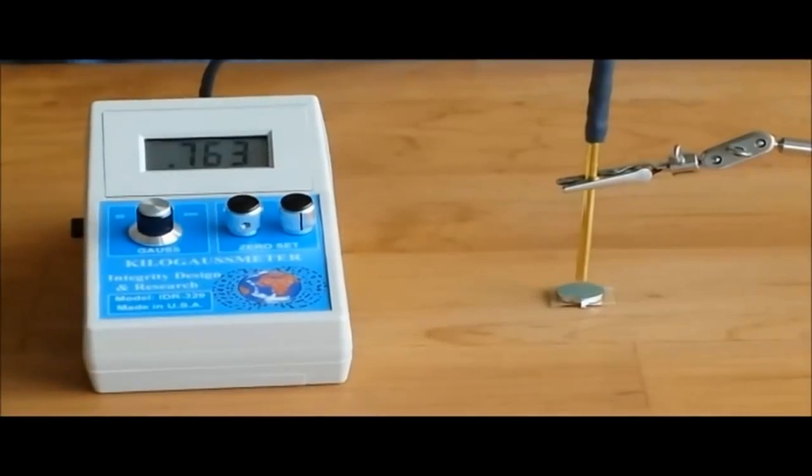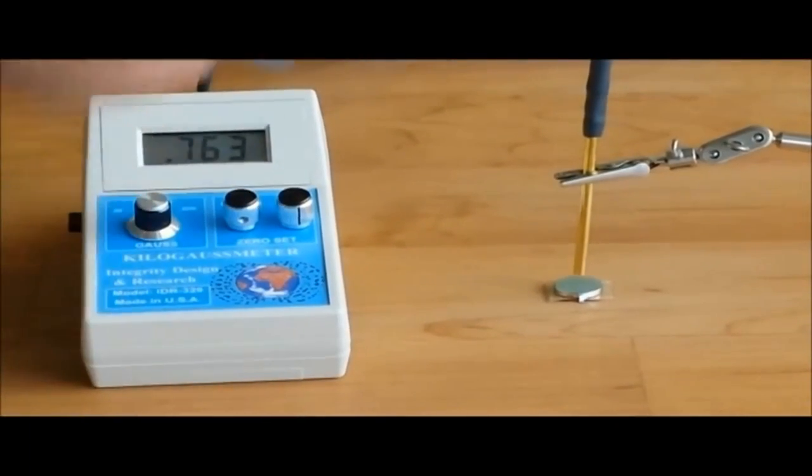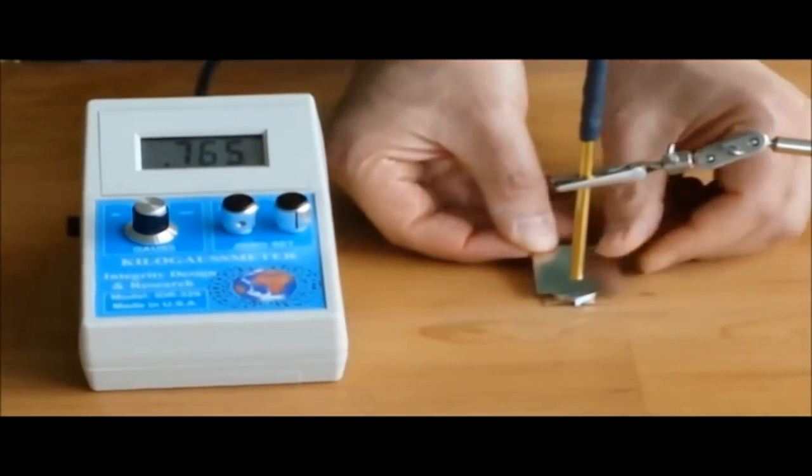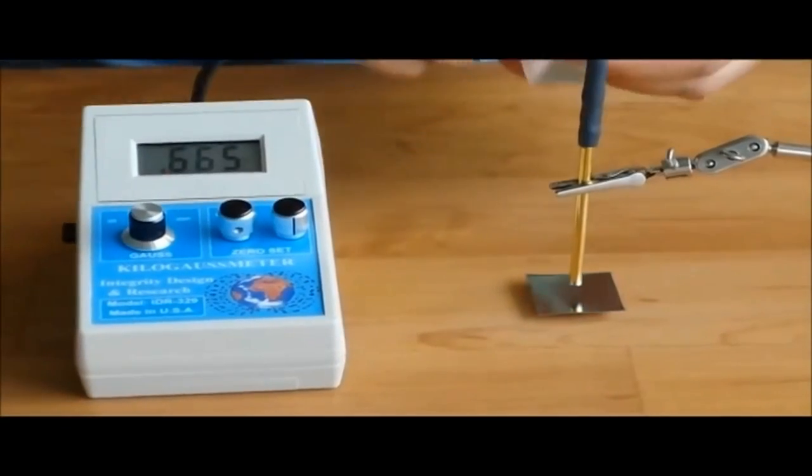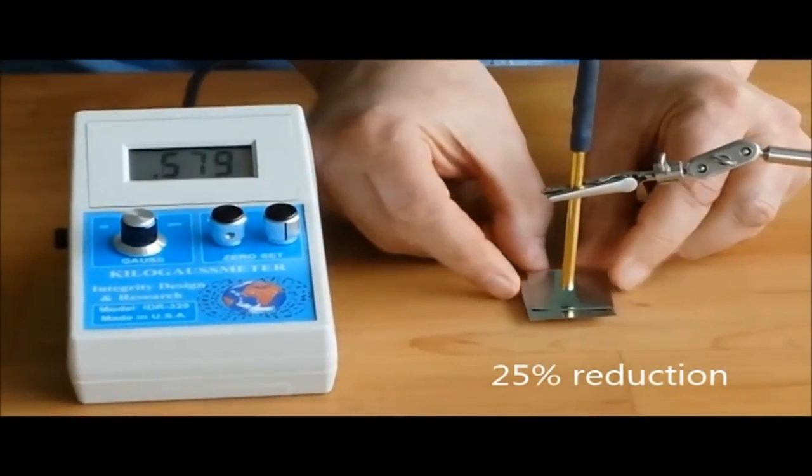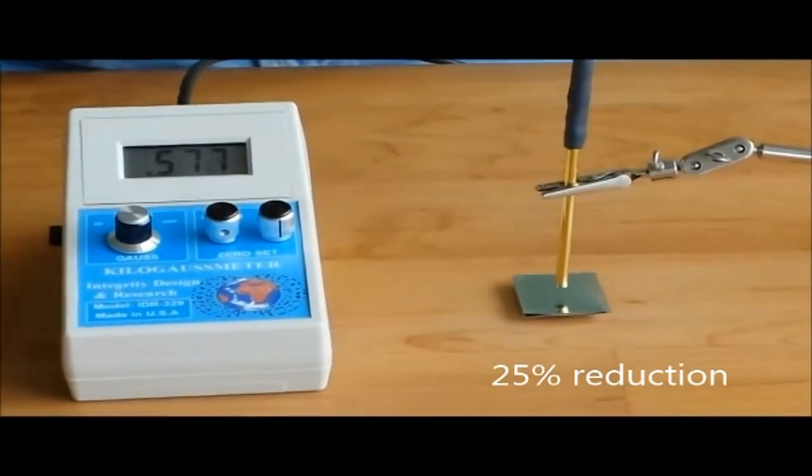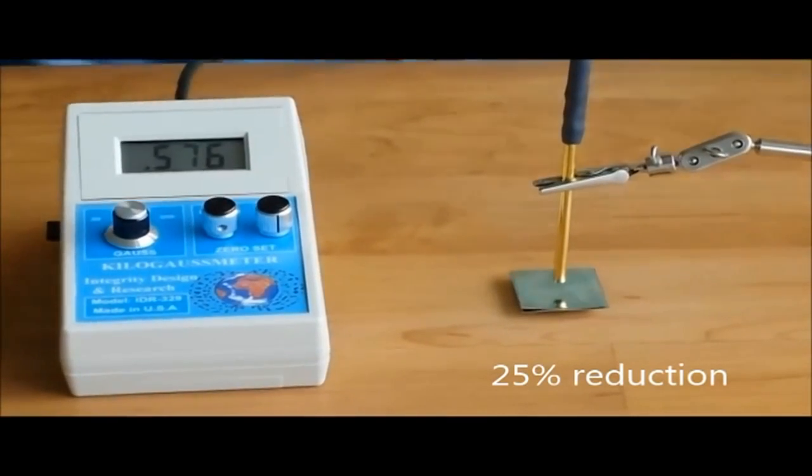Now, let's do the same experiment with magnet shield. I'm going to start with a small piece. One small piece drops the field to 665 gauss. Adding a second layer takes us to 570 gauss.